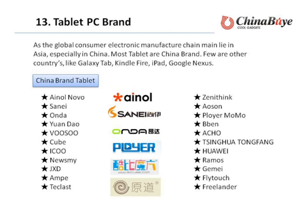Tablet brands: as a global consumer electronics manufacturing chain, mainlined in Asia, especially in China, most tablets are China brands, with few from other countries, like the Galaxy Tab, Kindle Fire, iPad, and Google Nexus. China brand tablets include Ainol, Norway, Sene, Ander, Yandao, Wesson, Qubi, iQoo, LiuSmile, GXD, Aimee, Teclaset, Zenysync, Awesome, PlayerMomo, Pibon, HL, Tsinghua Tongfang, Huawei, Zimers, Gormei, Flytouch, and Freelander.